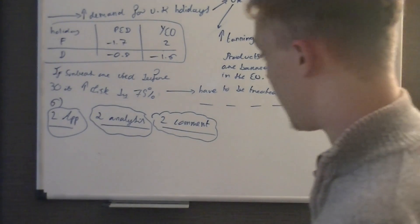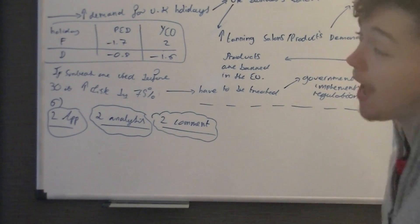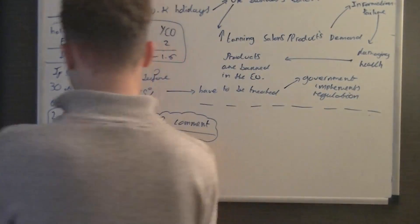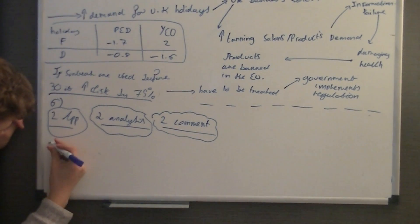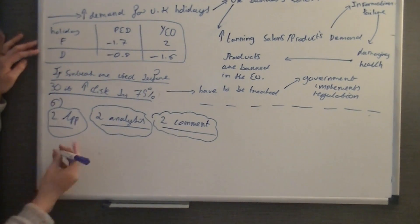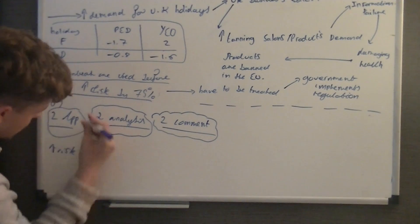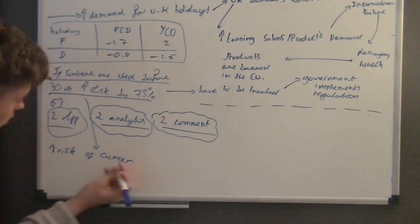So firstly, the thing you need to say is for application. You need to say what's bad about the thing. We said it's damaging health. You need to say how it damages health. So for application here, you could use this. One point you can make: if consumers, if sunbeds are used before 30, people could increase the risk of getting cancer. So increased risk of cancer.